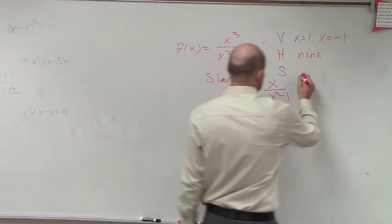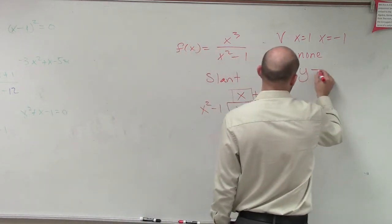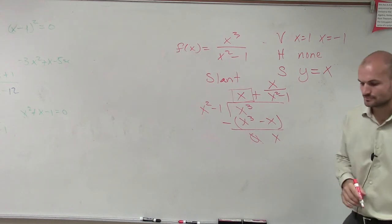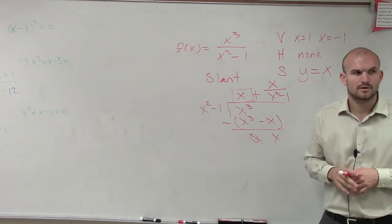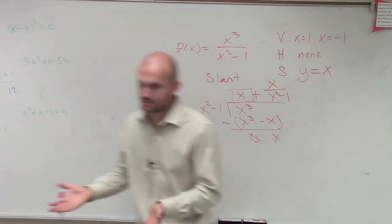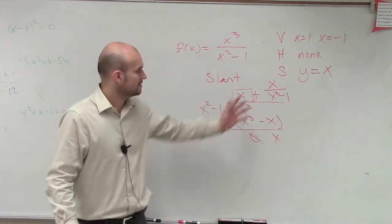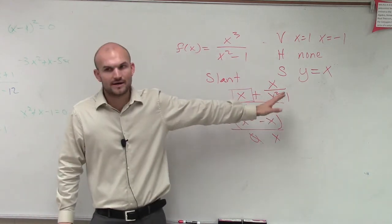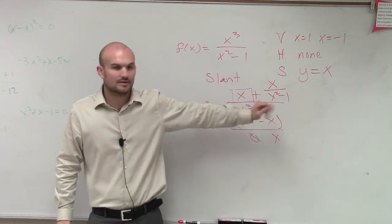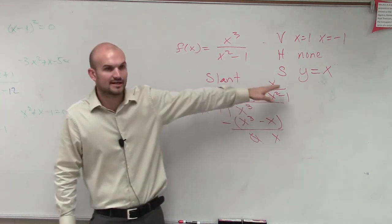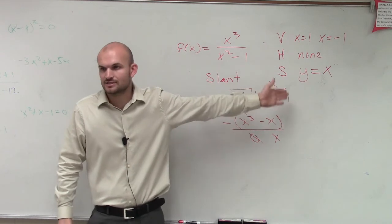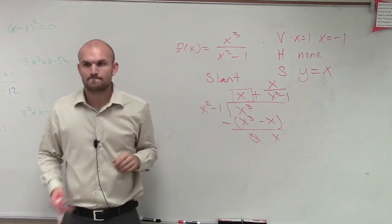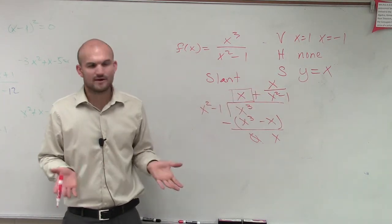So the slant asymptote is just going to deal with our quotient, not the remainder. The slant asymptote is the line y equals x. Just use long division, find your quotient, ignore the remainder, and set it equal to y. So y equals x.